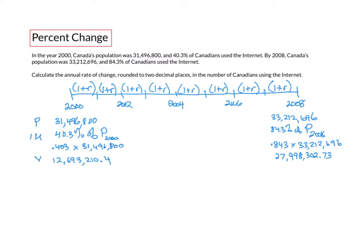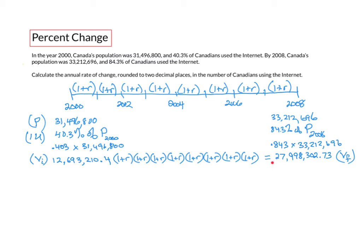The number of internet users in 2000 is the initial value and in 2008 is the final value. If we take the initial value and multiply it by successive regular percent change increases for each time interval, we get the final value. Since each percent increase is the same, we can represent the equation as: initial value times (1 + r) to the eighth power equals the final value.